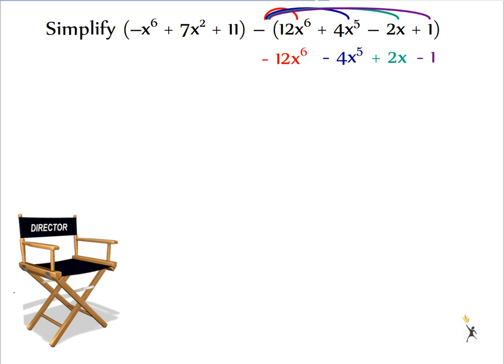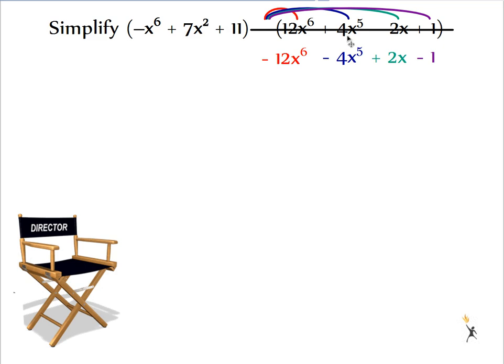Now I can pretty much ignore that second set of parentheses and use my new changed sign terms. I'm going to bring down my first set of parentheses. Nothing changes there. And now I can combine like terms. I end up with negative 13x to the 6th. I'm going to go in descending order. My next largest exponent is this 5, so I'm going to bring it down. There's no other x to the 5ths to combine it with.